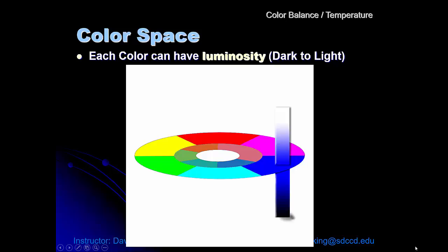But if we add black or we add white, or if in the digital world we add or decrease the light, then we get a luminosity range from dark to light, with the color wheel representing that color that's right in the middle, the most pure, the most saturated part of the color.